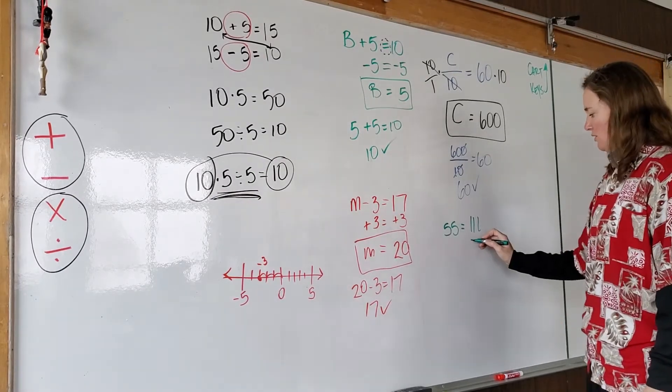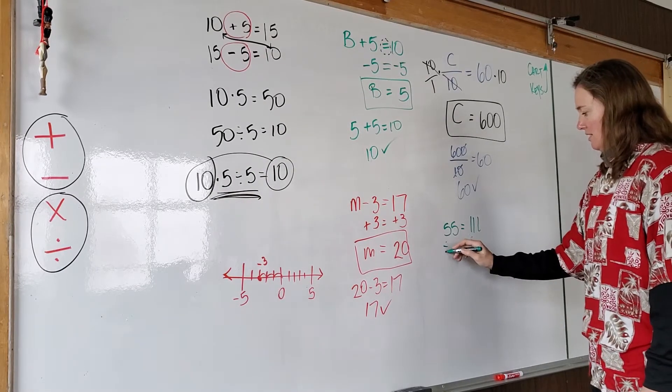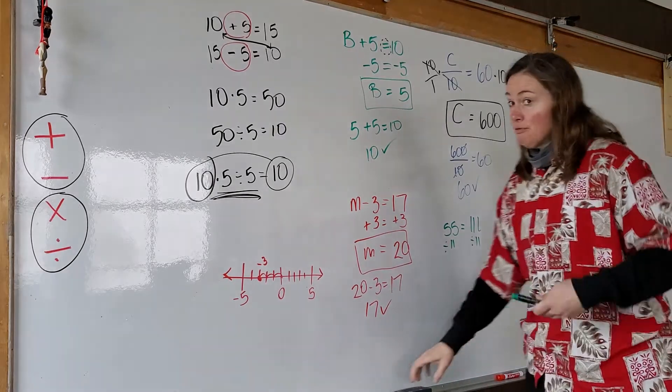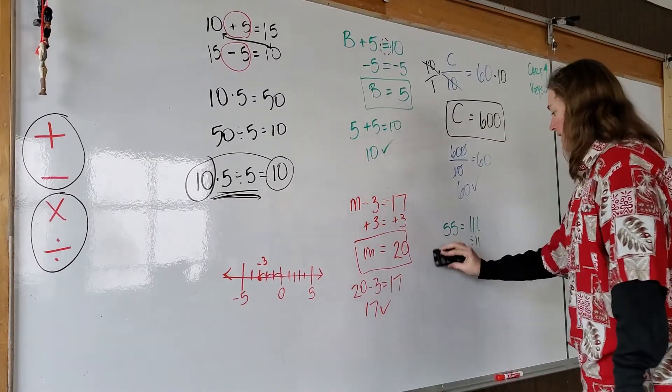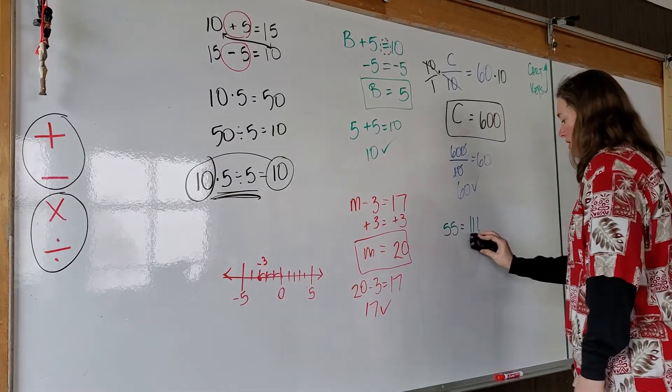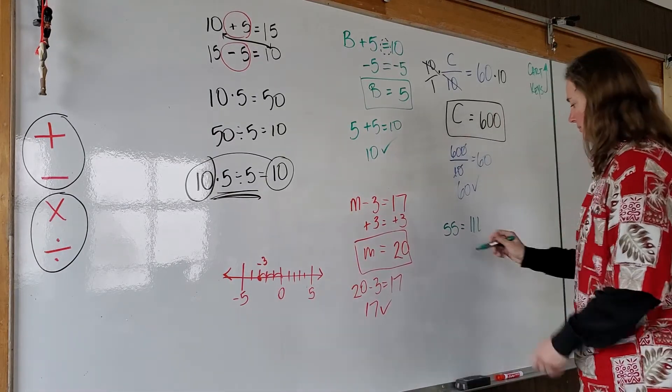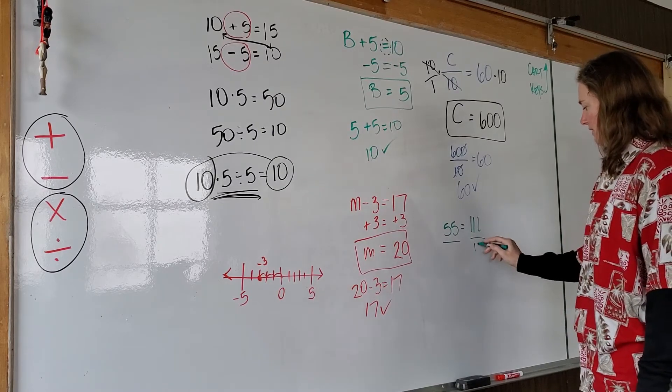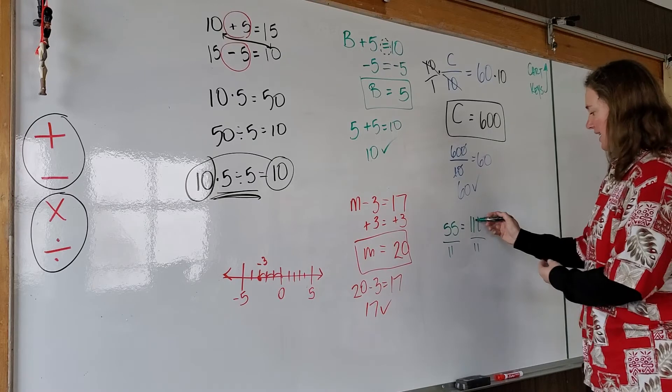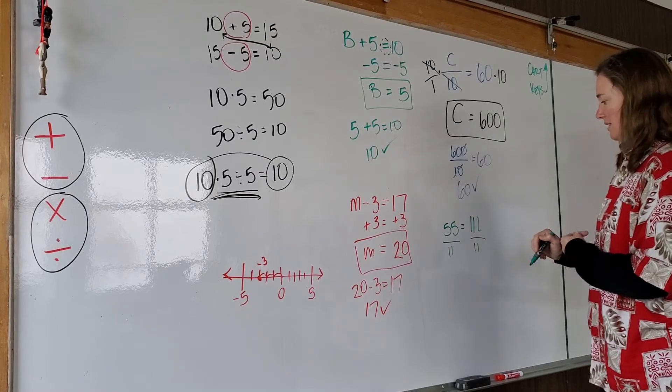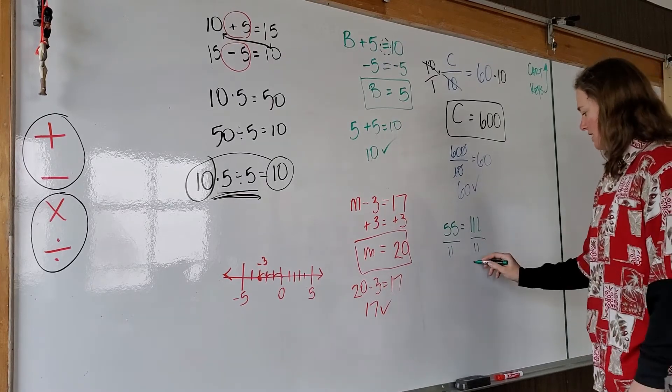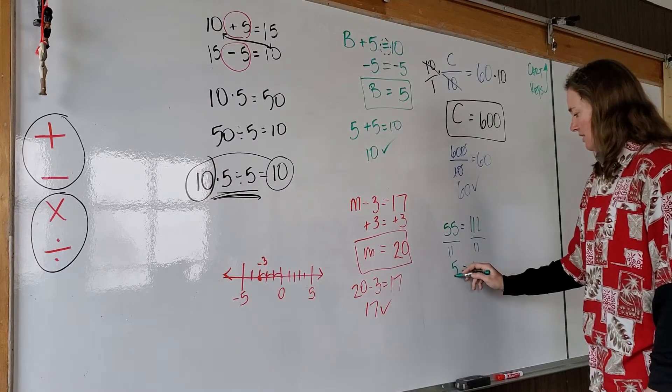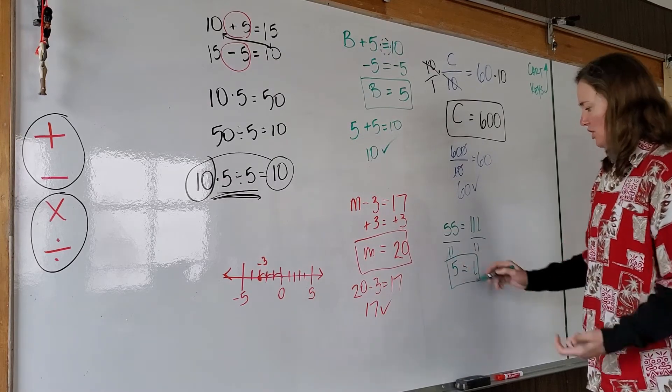Now there's a couple ways you can write it. The first way you could do is like this, and there's nothing wrong with that. The preferred way in mathematics is to use a division bar. Go like this, and then we're divided by 11 because that's what we're multiplying the variable by. And 11 divided by 11 is 1, and 1 times L is L. And 55 divided by 11 is 5.